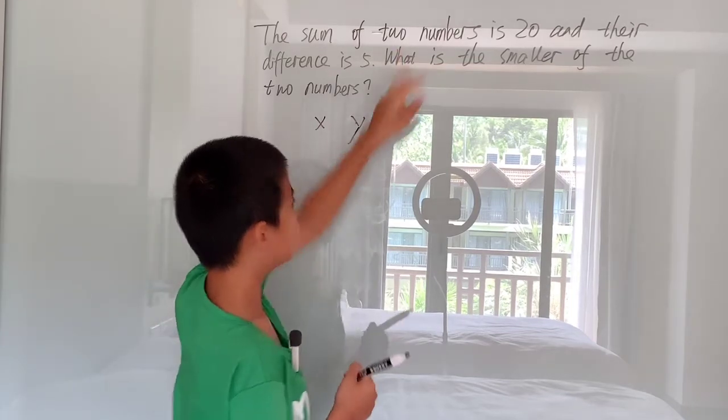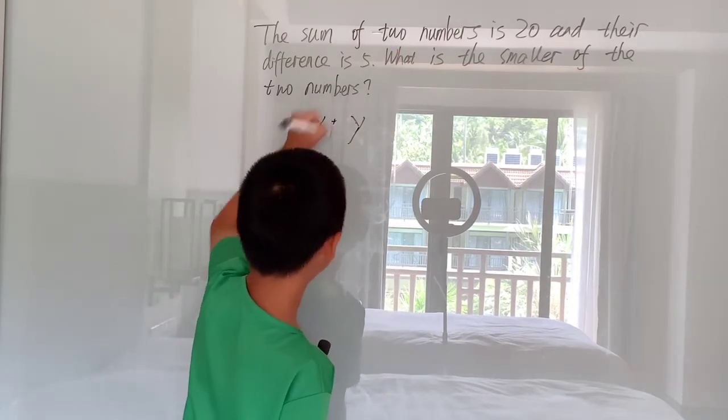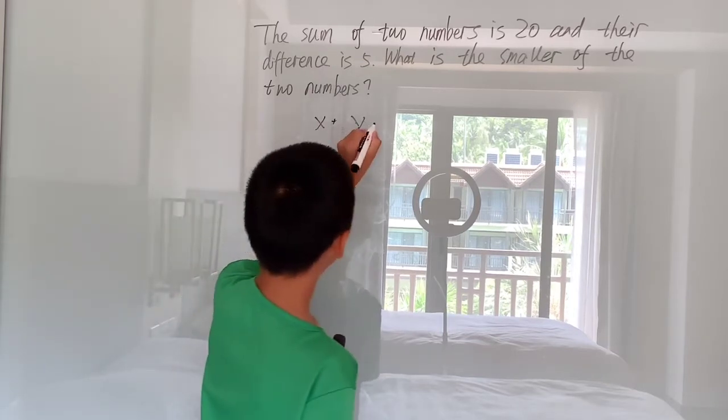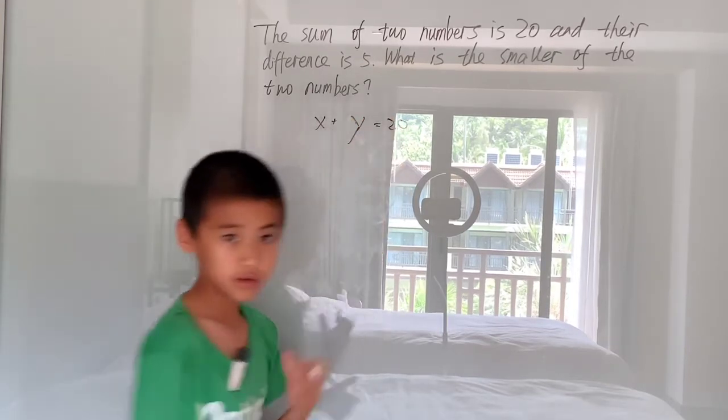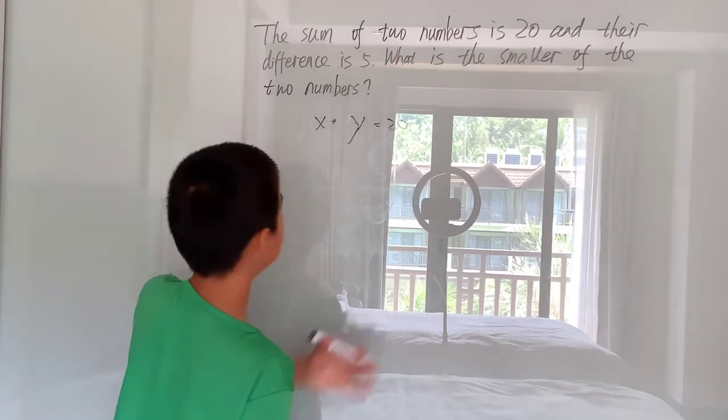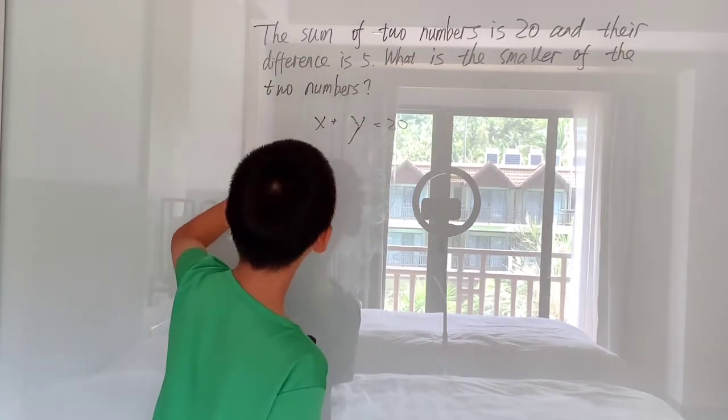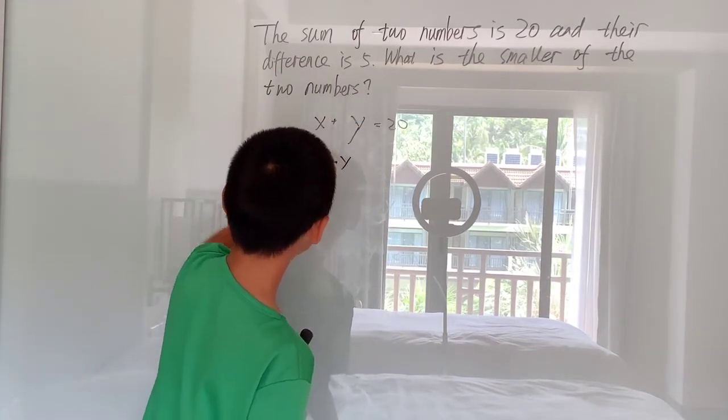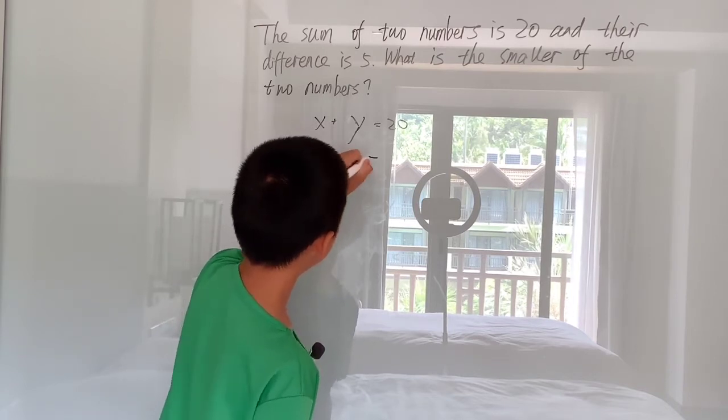And we also know that the sum of these two numbers, or in other words x plus y, the sum of the two numbers is 20, and the difference of the two numbers, their difference which is x minus y, their difference is 5.